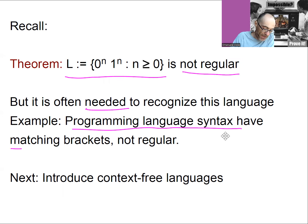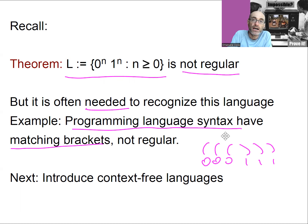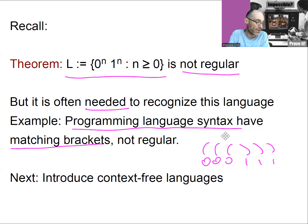For example, you may have matching brackets. If you think of matching brackets, a special case is that you open a bracket, open a bracket, open a bracket, close, close, close. This would be like matching zeros and ones — the zeros have to be on the left of the ones, and that would be the same number. Someone has to recognize if this text is written correctly, if you have the same number of open brackets and closed brackets. And a DFA cannot do it. So we're going to introduce context-free languages and show that they can do it.